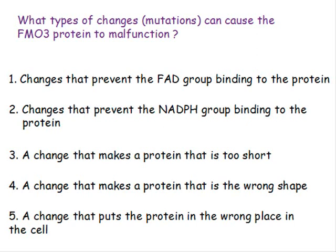What types of changes — mutations, that is, changes in the DNA — can cause the FMO3 protein to malfunction? Changes that prevent the FAD group from binding will cause the protein to malfunction, because it won't have the flavin attached. Changes that prevent the NADPH group from binding will also not allow the protein to carry out its job properly. Some changes cause a protein to be made that is too short — protein synthesis will start, but the mutation causes it to stop, so not all the information needed to make the protein is present.